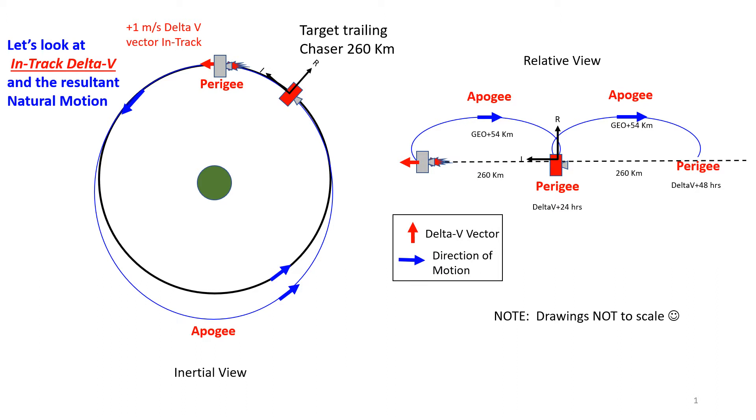Hello and welcome to part two. As a matter of review, we have a target with a RIC frame on it. RIC is radial, in-track, cross-track—forward, sideways. We're going to remain in geo orbit and place our chaser 260 kilometers ahead of the target in the same orbit. We've added a little distance between the chaser. Whereas before we were looking at radial delta-v's and the resultant motion which creates a natural motion circumnavigation, a two by one ellipse.